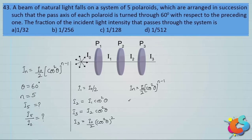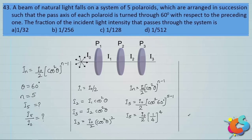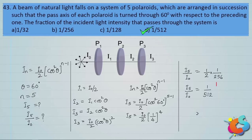With θ = 60° and n = 5, we find I₅/I₀ = (1/2) · (cos²60°)^4 = (1/2) · (1/4)^4 = (1/2) · (1/256) = 1/512. So the fraction of incident light transmitted through the system is 1/512. Therefore option D is the correct answer.